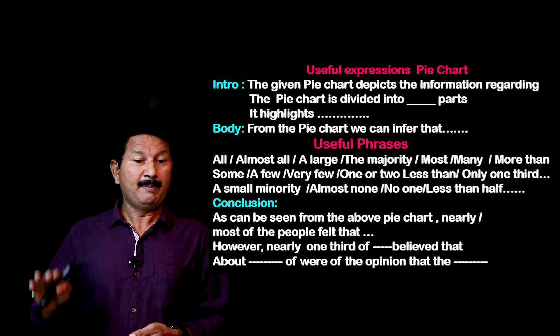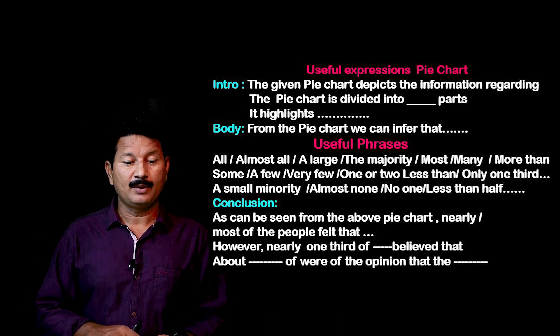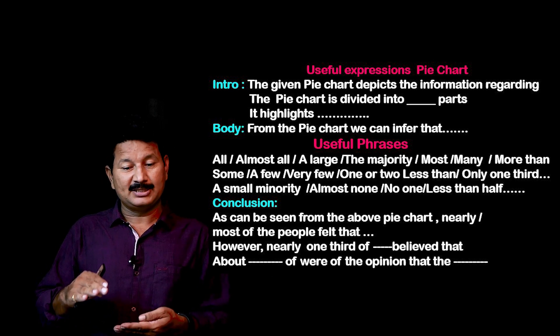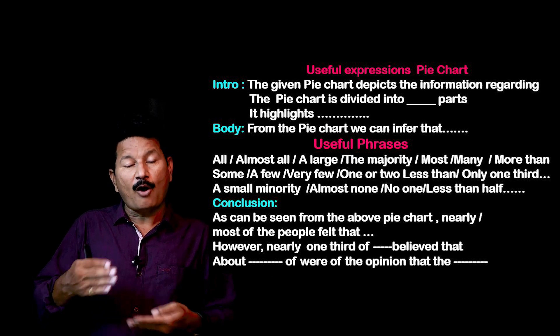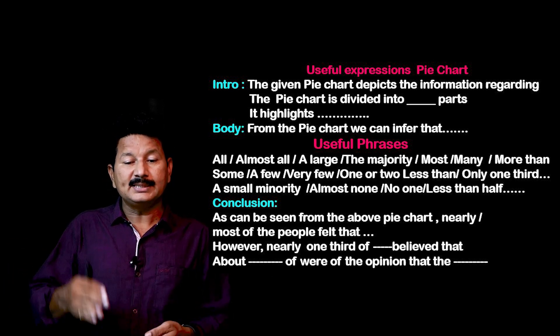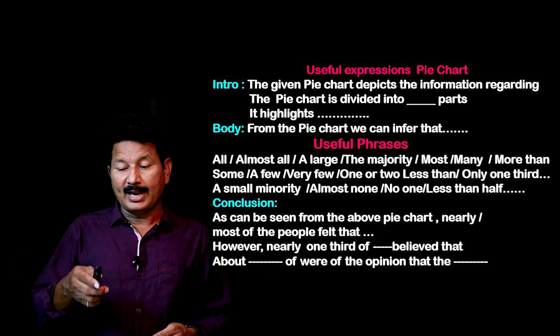Finally, when you want to conclude a paragraph, you can say 'as can be seen from the above pie chart,' or 'most of the people felt that,' or 'however nearly one third of people believed that,' or 'about dash percent were of the opinion that.' This is how we can use these kinds of expressions.